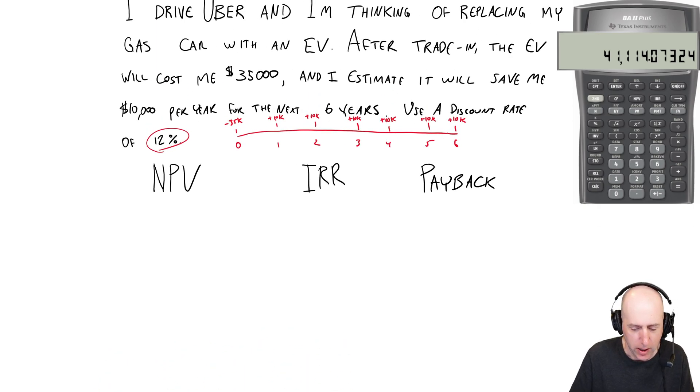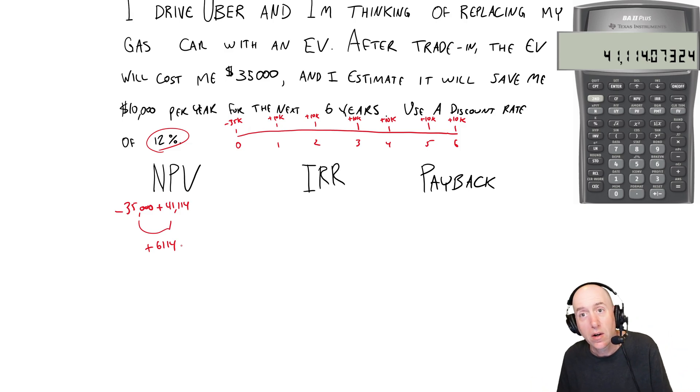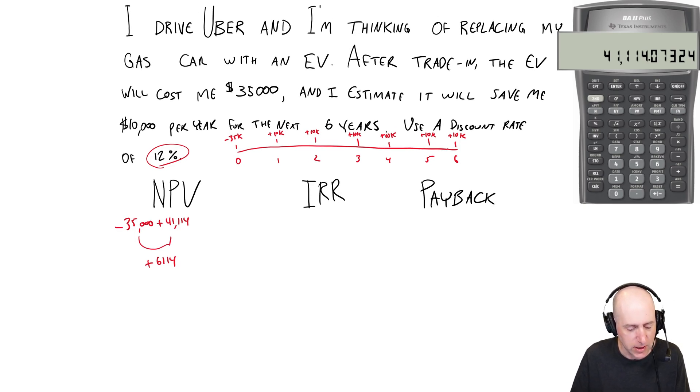So looking at my NPV, I have to put out $35,000 today, but the present value of those $10,000 cash flows is 41,114. So overall I'm up 6,114. In our class, if the net present value is positive, we say, do it, go ahead with the project. It has a positive NPV. It is worth doing. That's what we would say here. If you want to do this, maybe more quickly in a financial calculator,